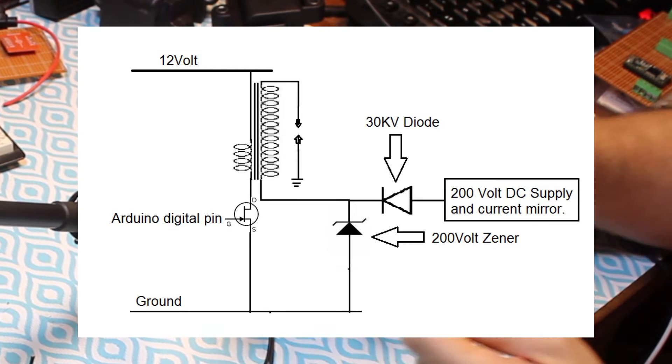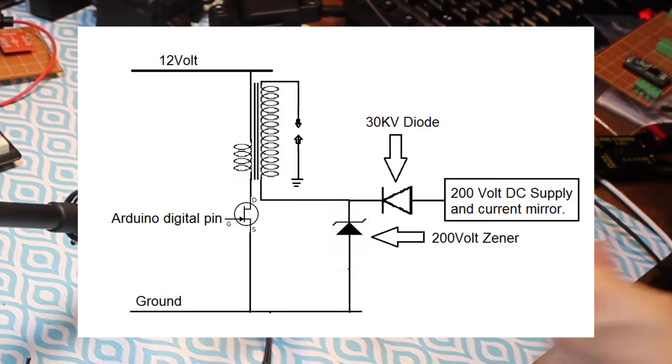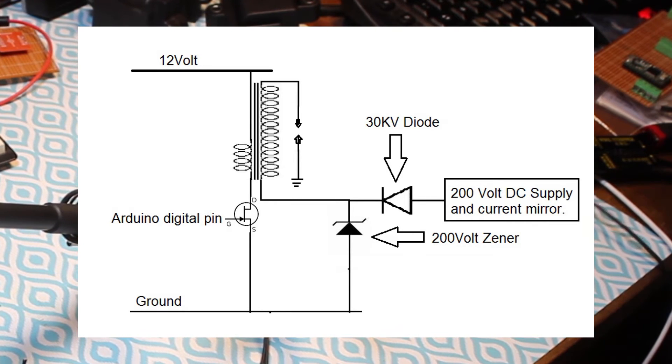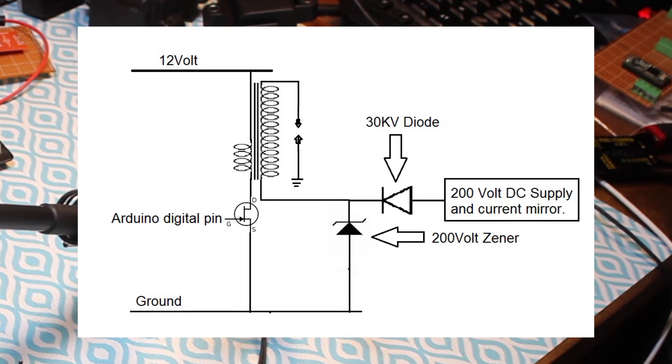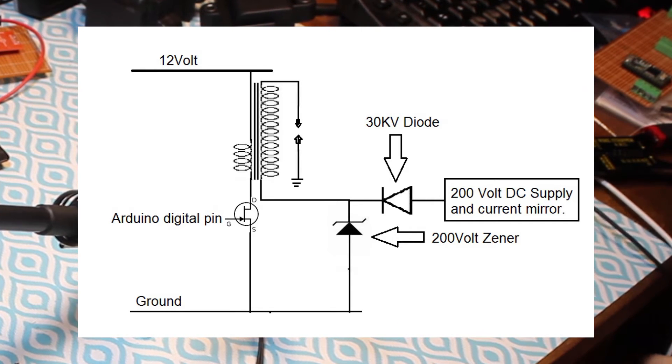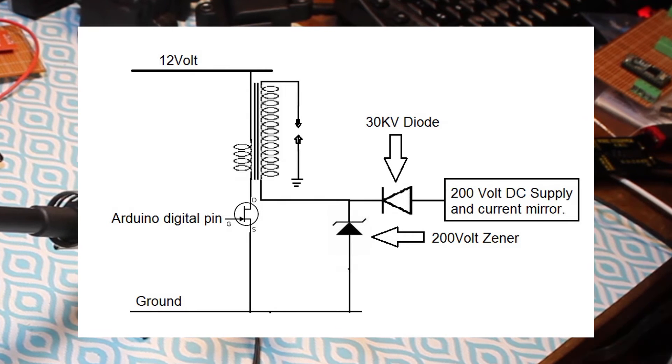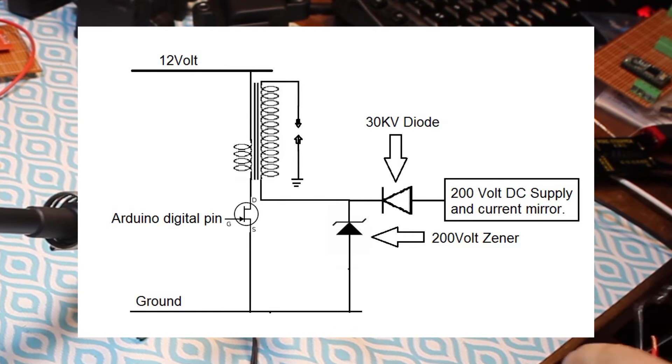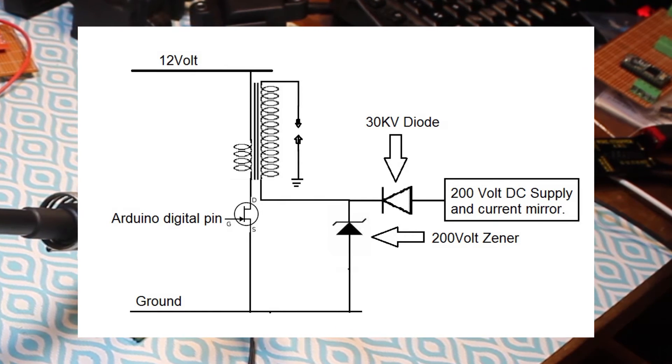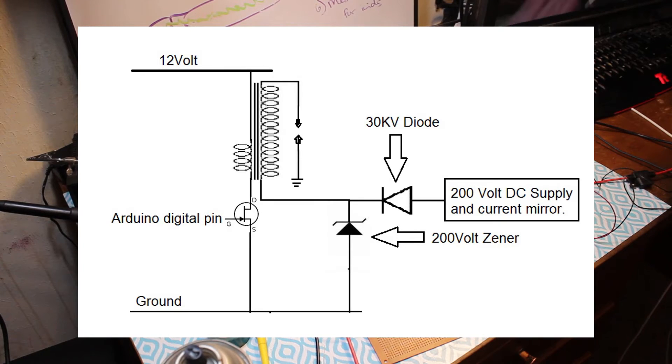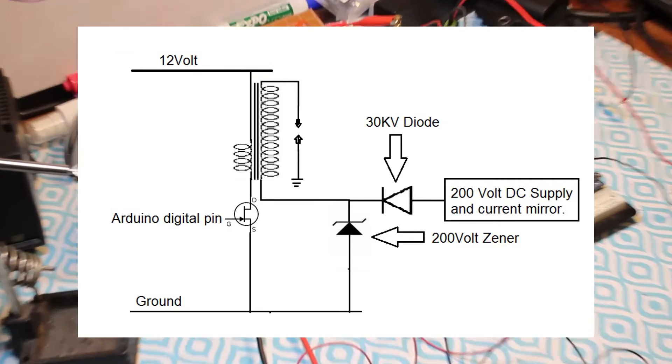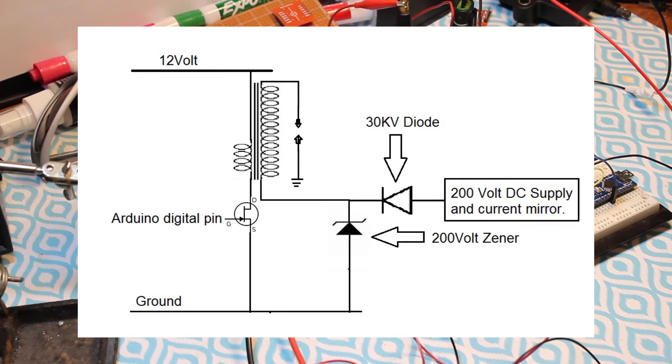I've placed a 200 volt Zener diode to ground, and this limits that side of the coil to plus 200 volts, while not draining my high voltage power supply straight to the ground. I also have a 30 kilovolt diode to my 200 volt DC power supply and current mirror. This is to protect it from full ignition voltage and current.